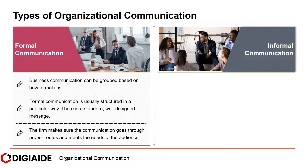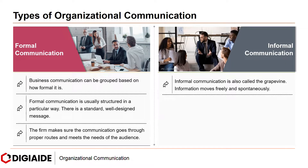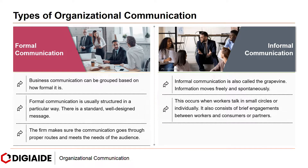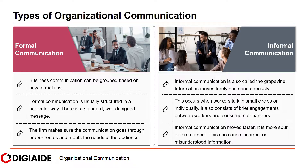On the other hand, we have informal communication, also called the grapevine. Information moves freely and spontaneously. This occurs when workers talk in small circles or individually, and it also consists of brief engagements between workers and consumers or partners. Informal communication is faster and more spur of the moment, which can cause incorrect or misunderstood information.